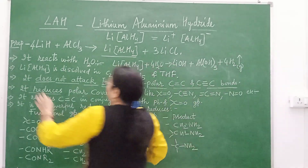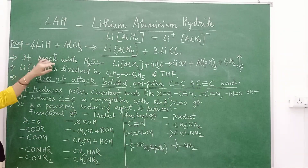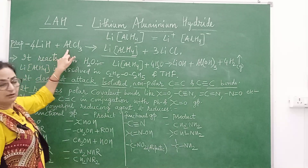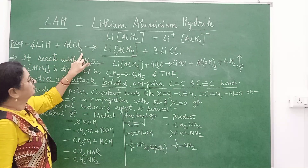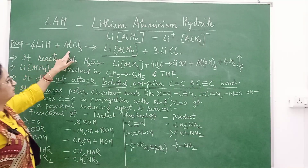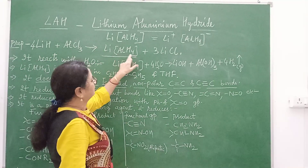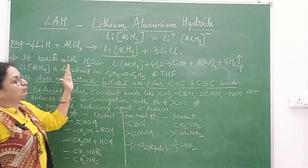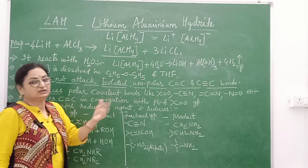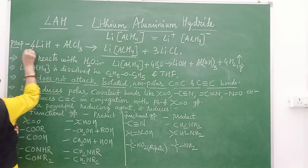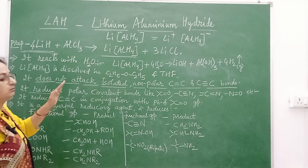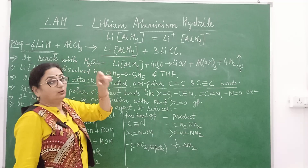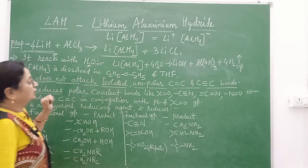Now let's see how it is prepared. It is prepared by the reaction of 4 moles of lithium hydride with 1 mole of aluminium chloride. When 4 moles of lithium hydride reacts with aluminium chloride, we get lithium aluminium hydride plus 3 moles of HCl. This lithium aluminium hydride is highly expensive because we have to use 4 moles of lithium hydride against 1 mole of aluminium chloride to prepare only 1 mole of it.